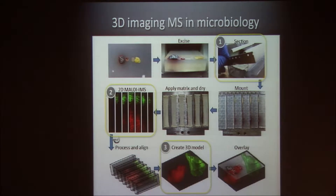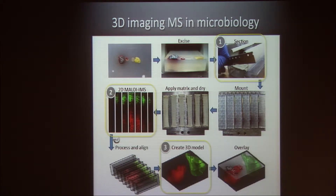The dataset is huge — up to several hundreds of gigabytes. Now I would like to make it even more complex and show how it can be used for 3D. The current protocol for 3D is to section a sample, then do 2D imaging mass spectrometry for each section, and afterwards merge it back into a 3D model.